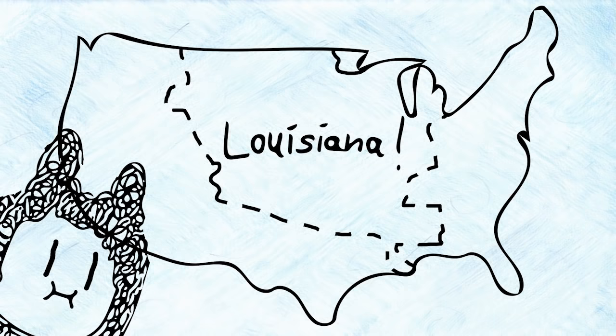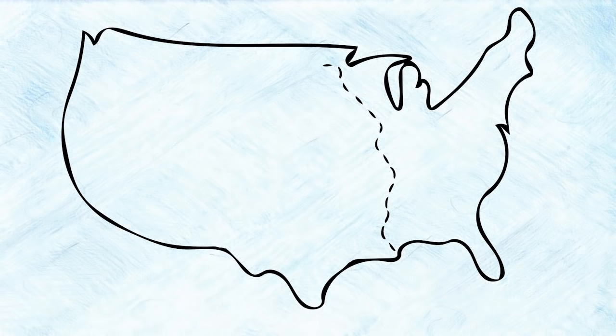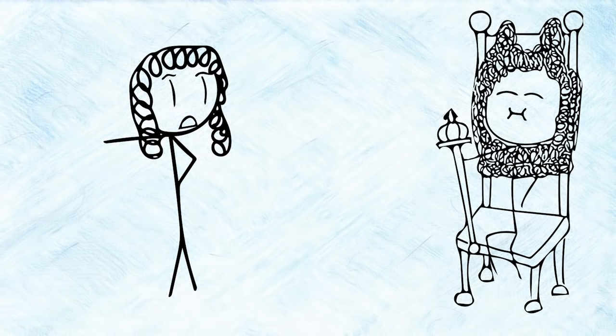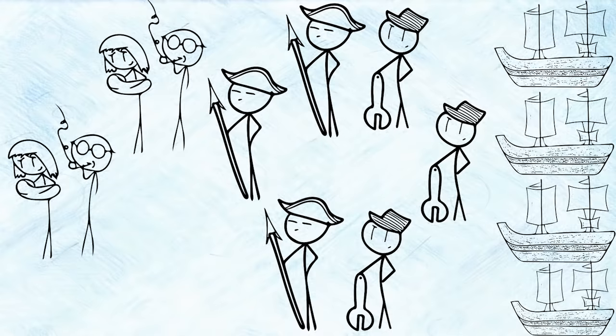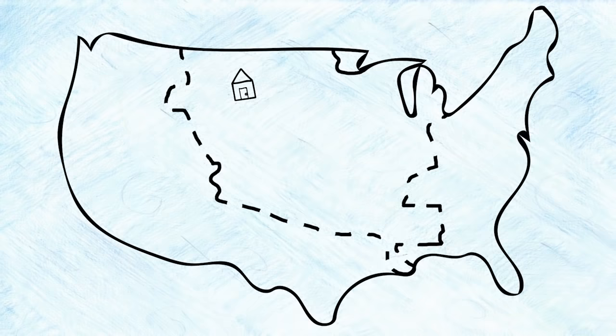But all that glitters is not gold, as LaSalle tragically loses several men and ships on this trip. After reaching the end of the river, he returns to France once again for more resources. The king happily provides LaSalle with four ships and hundreds of engineers, soldiers, and families to colonize the Louisiana territory.